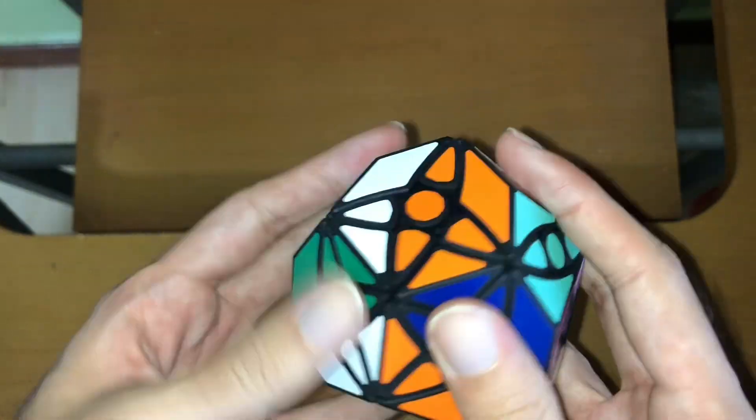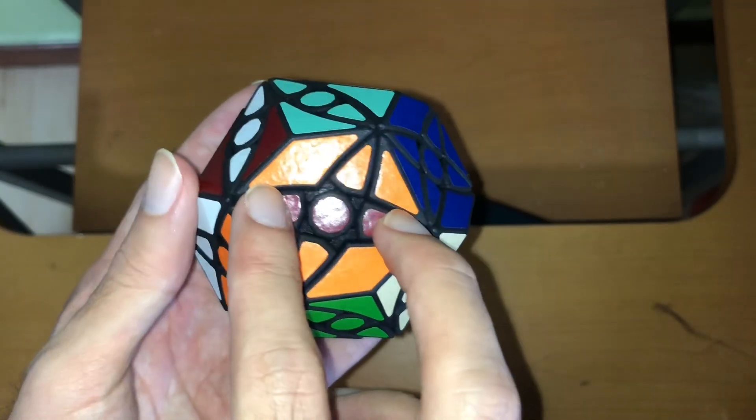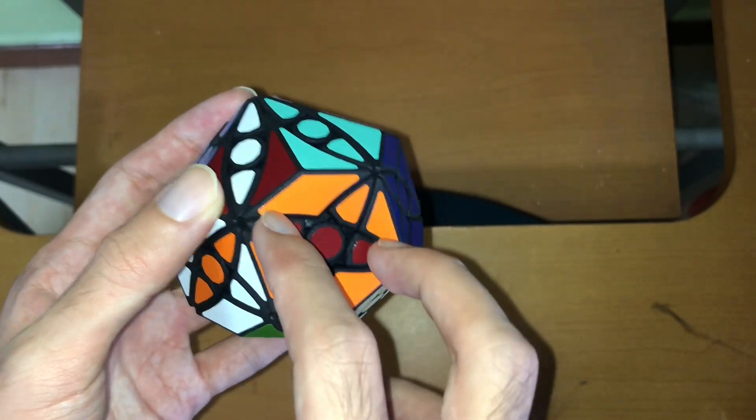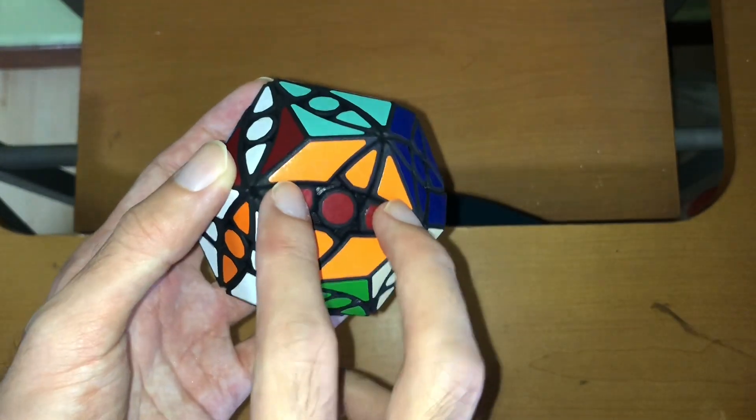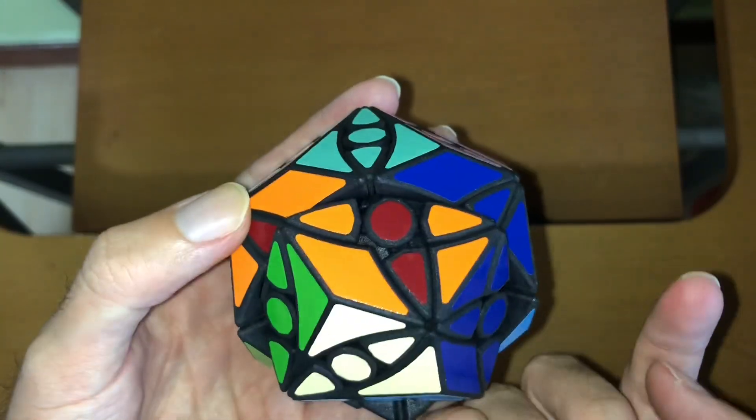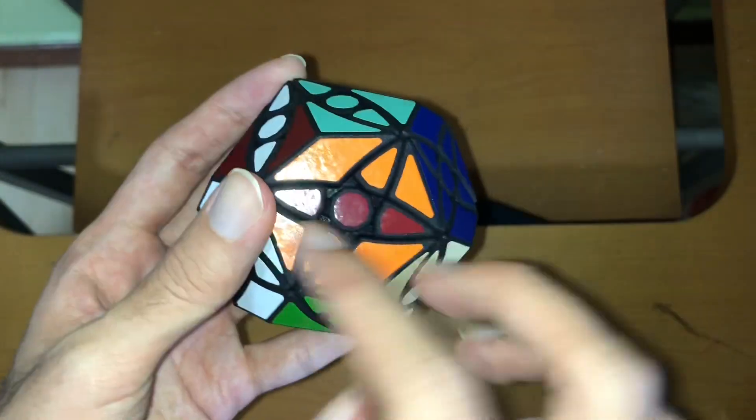So one thing you might have noticed as I'm making moves on this puzzle is that these two pieces will always remain paired with each other if I just make these moves. You can separate them temporarily, but when you restore the centers they'll always come back together.